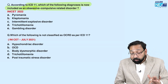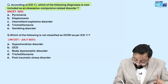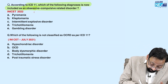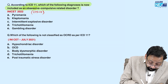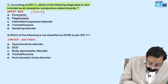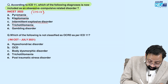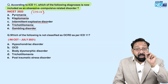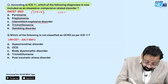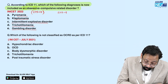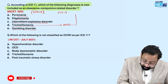All options in that question were impulse control disorders according to ICD-10: pyromania, kleptomania, intermittent explosive disorder, trichotillomania, and gambling disorder. But in ICD-11, trichotillomania is now classified under OCRD — that is the answer.